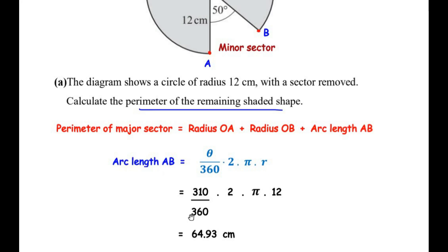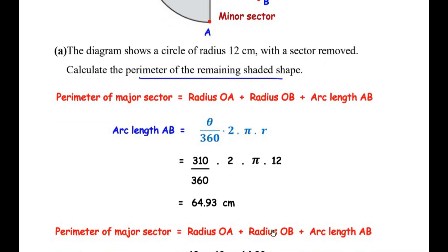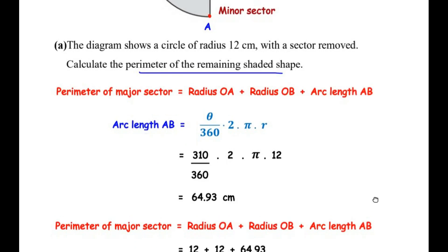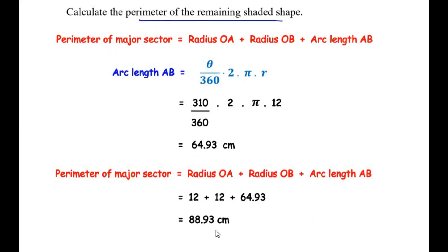Now that we have the arc length AB, we can find the perimeter of the remaining shaded shape. Perimeter equals radius OA plus radius OB plus arc length AB, so 12 plus 12 plus 64.93. The total perimeter of the remaining shaded region is 88.93 centimeters.